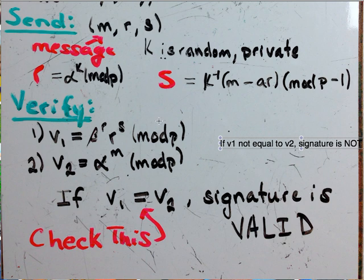This is essentially what you need to check. You send (M, R, S), and to verify, check if V1 equals V2. I'll do another video on why this works, but this is how the protocol operates.